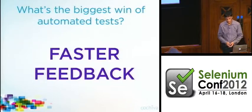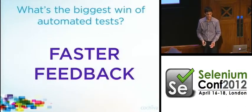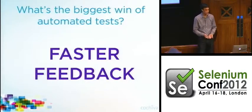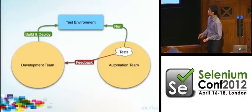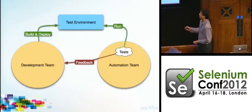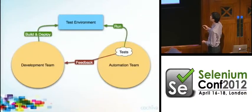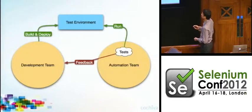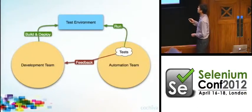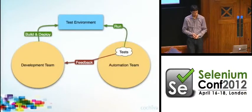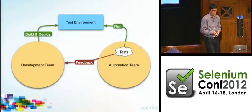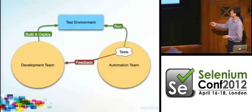Let's say we decide we want to write some automated tests, and because our development team is very expensive and very busy, we decide to hire some new people to work on the tests. We end up with an organization where developers are building and deploying to a test environment, and the automation folks own the tests. When there's a new version of the software in the test environment, the automation team runs those tests and feeds information about bugs back to the developers.